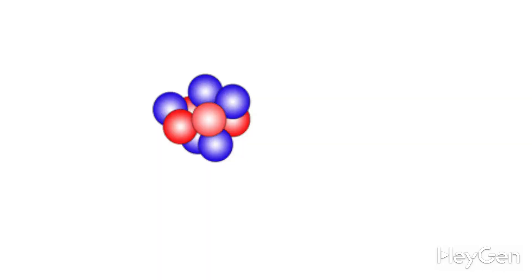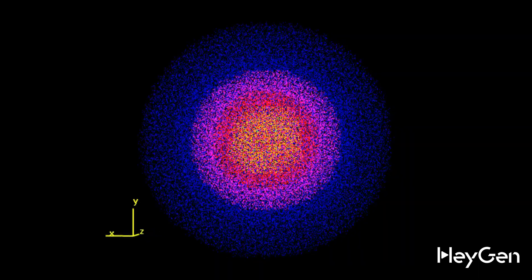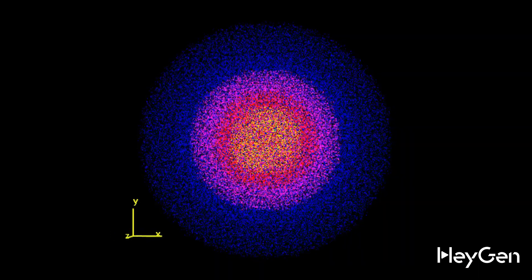According to the standard model, the nucleus of an atom consists of neutrons and protons, and the electrons are arranged around this nucleus.